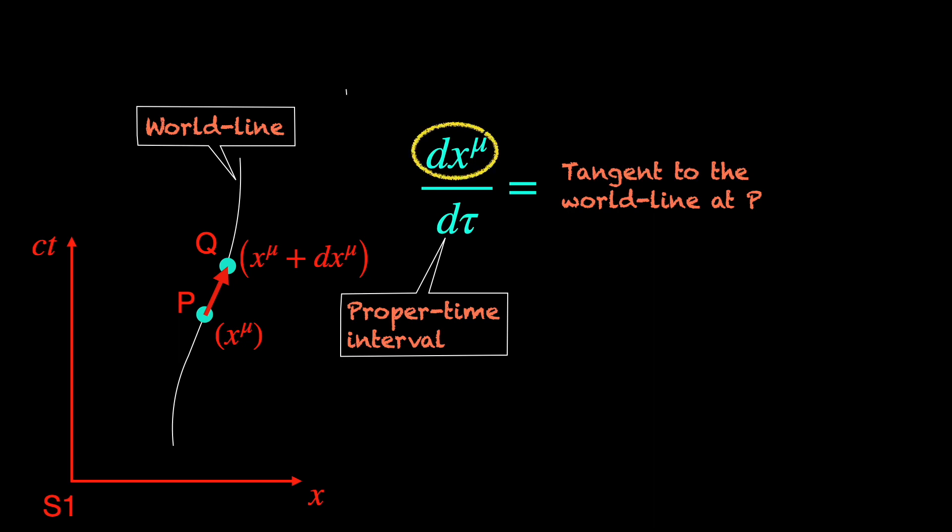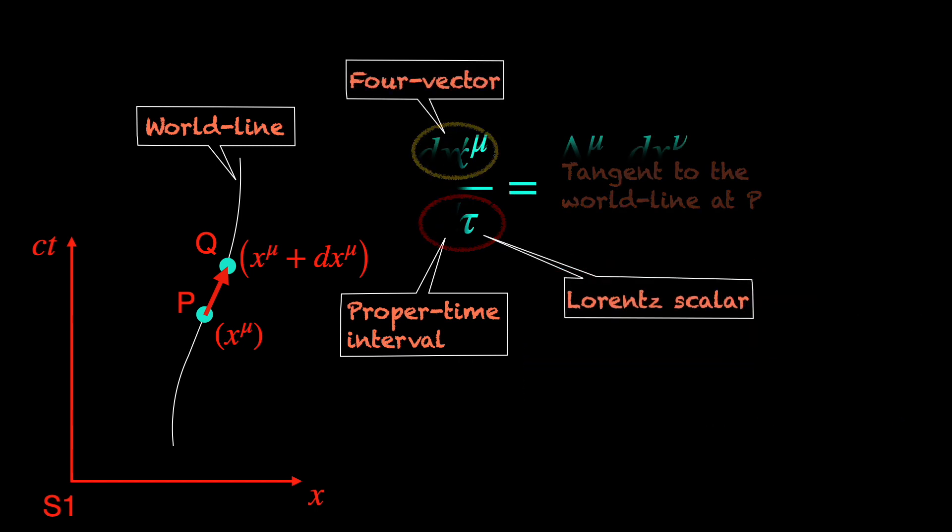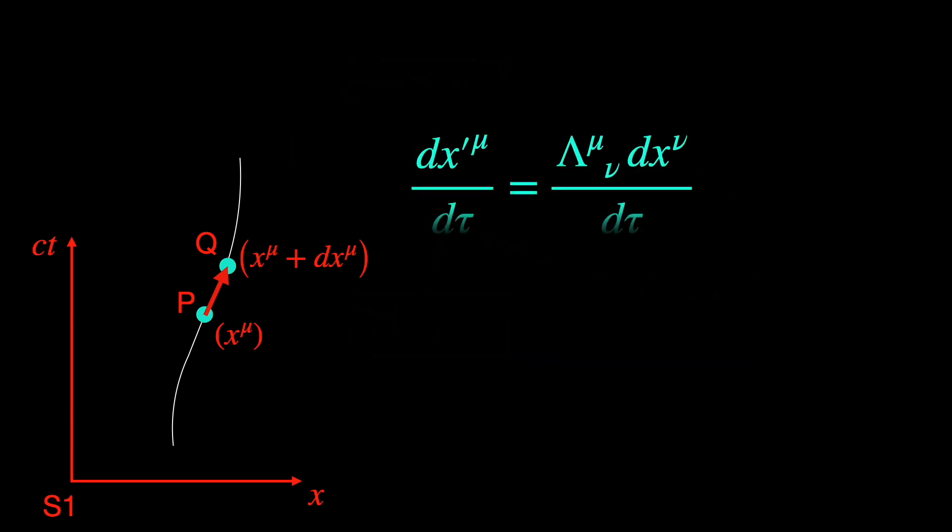Anyway, the dx mu in dx mu d tau is already a four vector. We discussed that, right? Down below, the infinitesimal proper time interval d tau is a Lorentz scalar or Lorentz invariant, meaning its value remains the same in all inertial frames. Why? Because c square d tau square, the speed of light square times the proper time interval square between P and Q is numerically equal to the space-time interval d s square between them, that is between P and Q. And space-time interval is invariant under Lorentz transformation. It's like Relativity 101, right? So, the upper bit transforms like a four vector, and the lower bit does not transform at all, just goes for a ride, giving an overall four vector again.